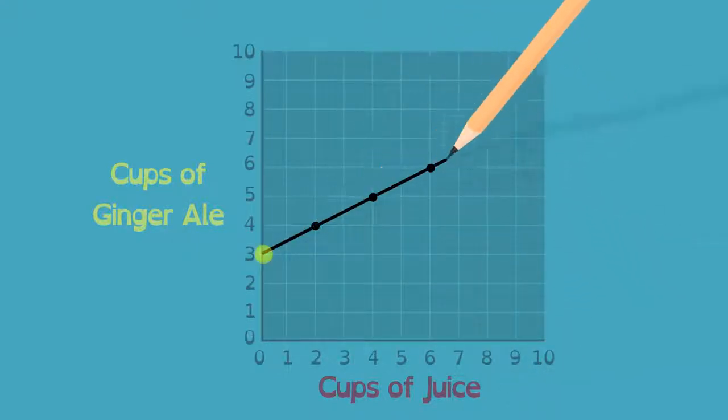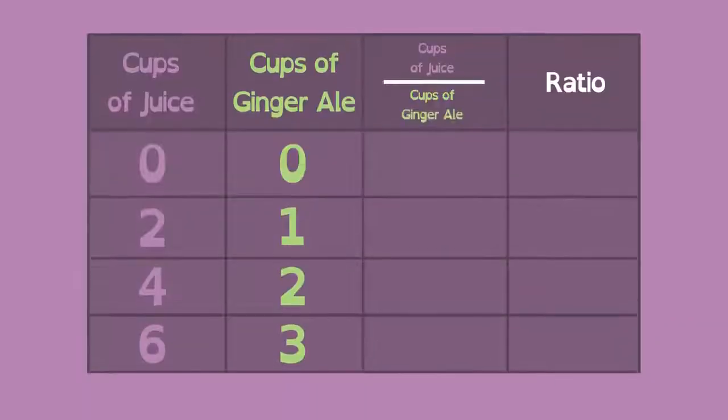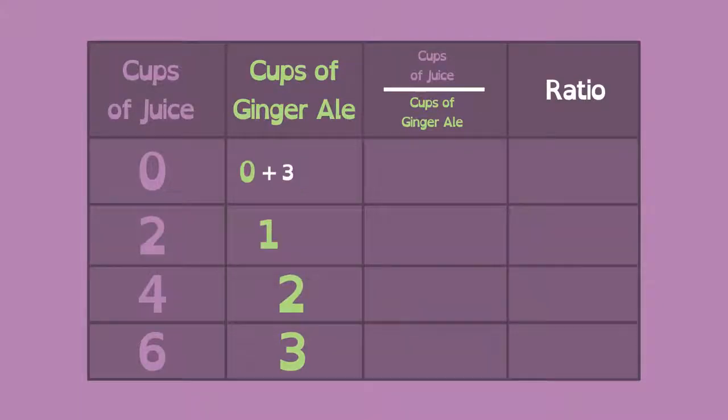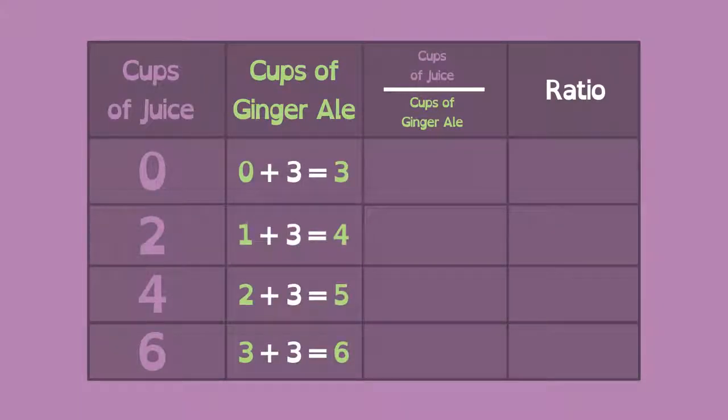Check out this graph. The line starts at three cups of ginger ale. So we would need to add three to all our previous answers on the table. But if we do that,